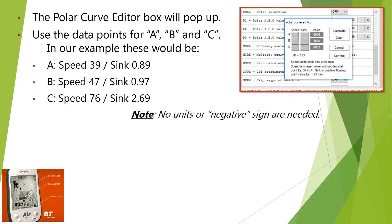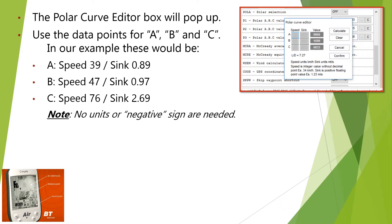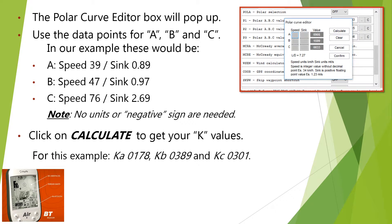Note that you will not need to use units or a negative sign. Then click on Calculate to get your K values. For this example, these would be K value A: 0.178, K value B: 0.389, and K value C: 0.301.